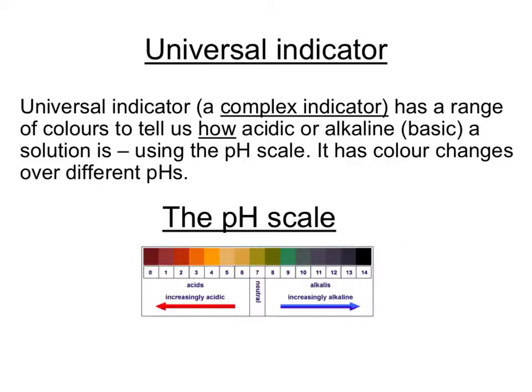Other indicators are called complex indicators and one of these is universal indicator. Universal indicator gives a range of different colours for different strengths of acid or alkaline.